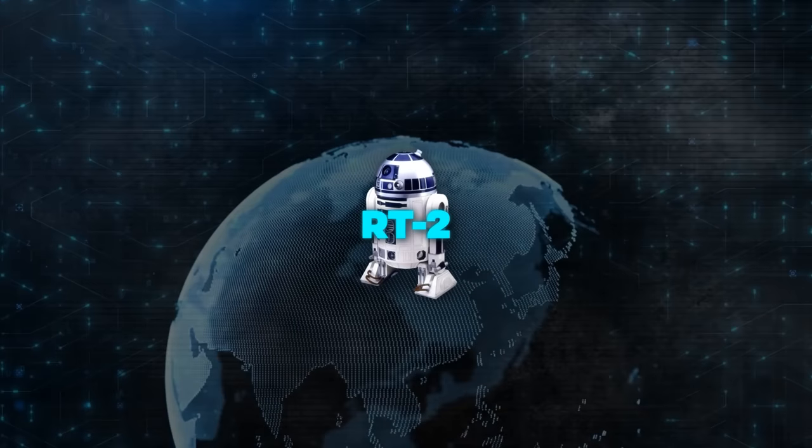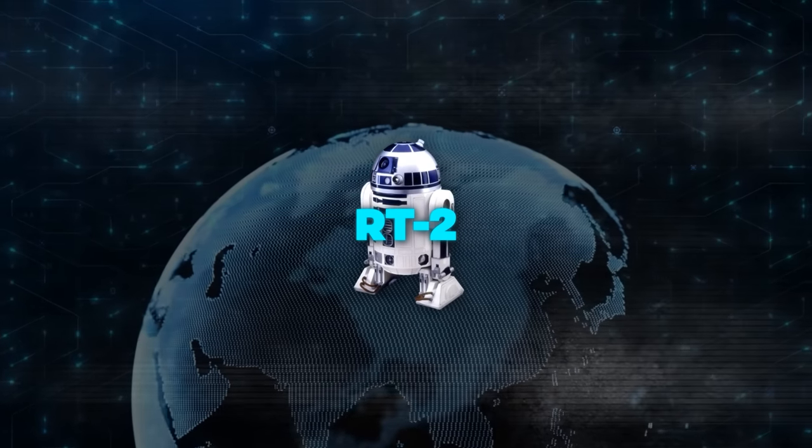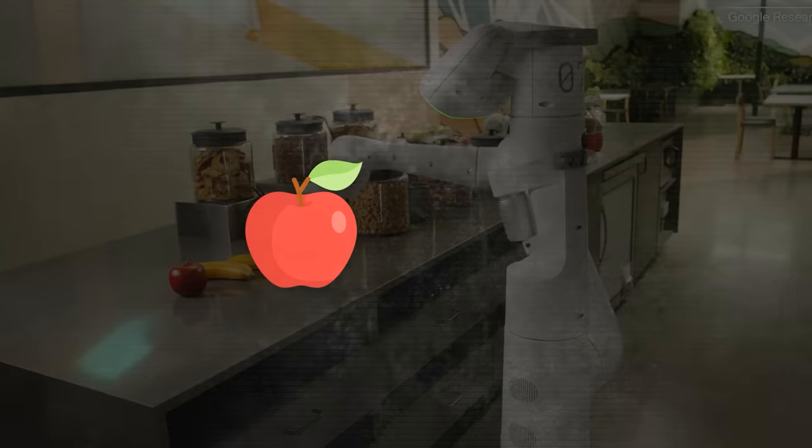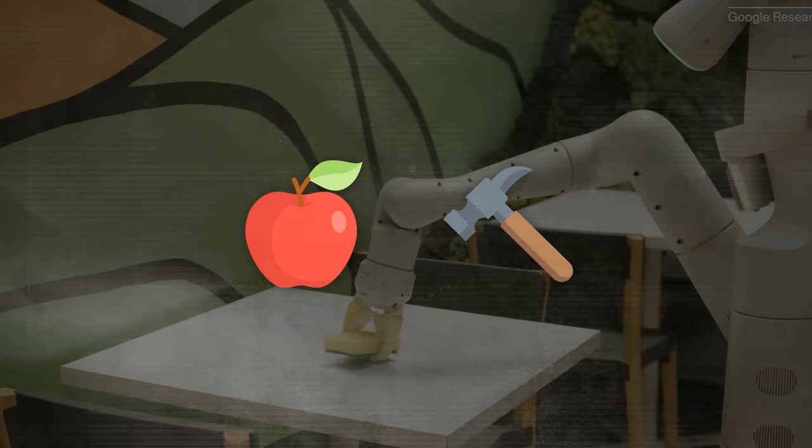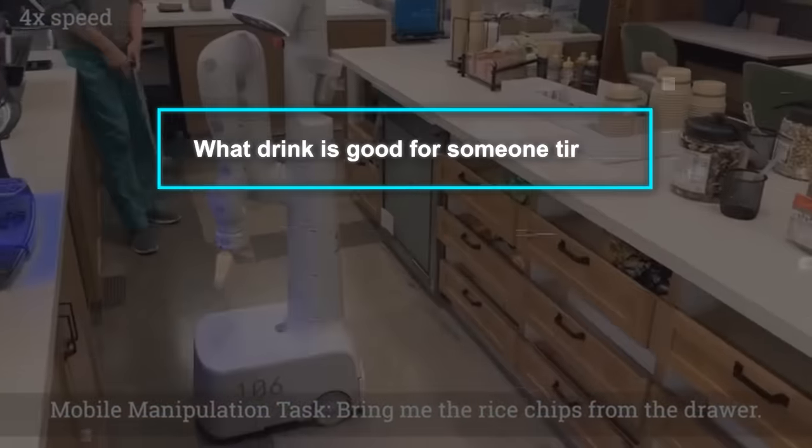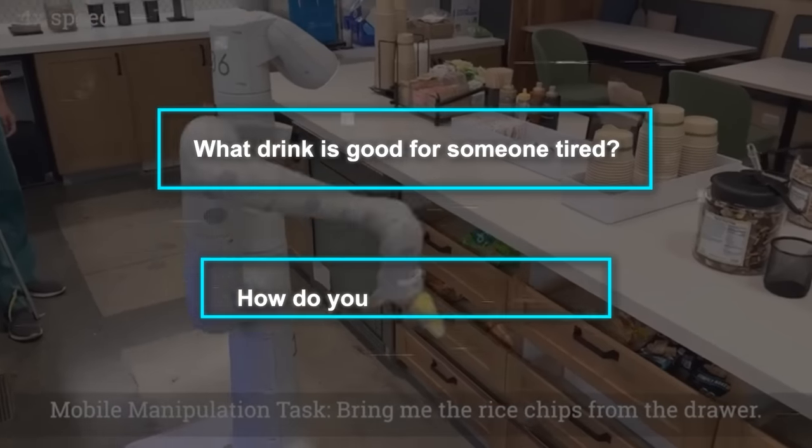What's cool about RT2 is that it can do more than what it was specifically taught. It can figure out new commands, like pick up a red apple, or find a tool like a hammer. It can also think a bit, answering questions like, what drink is good for someone tired, or how do you make a sandwich?